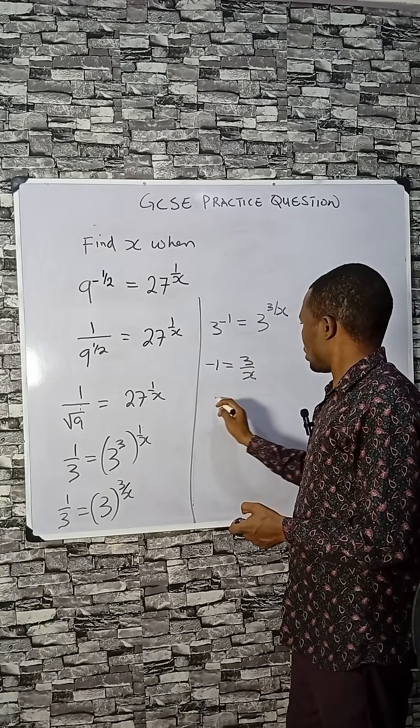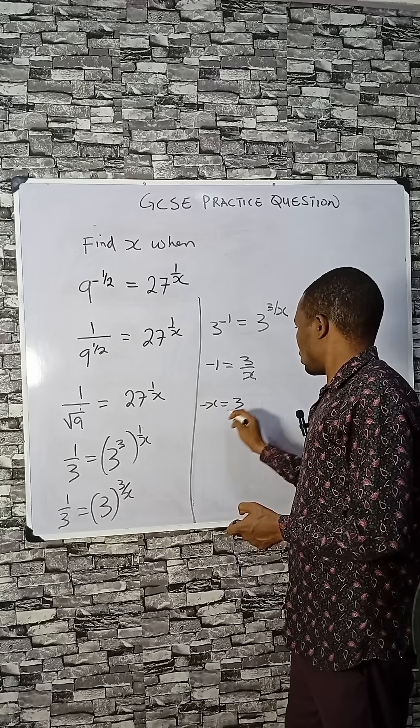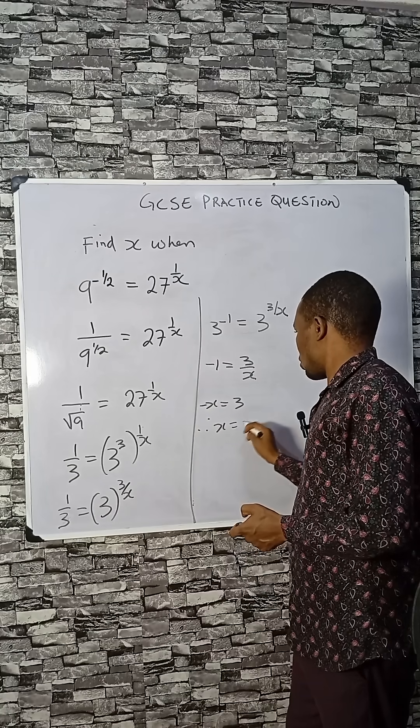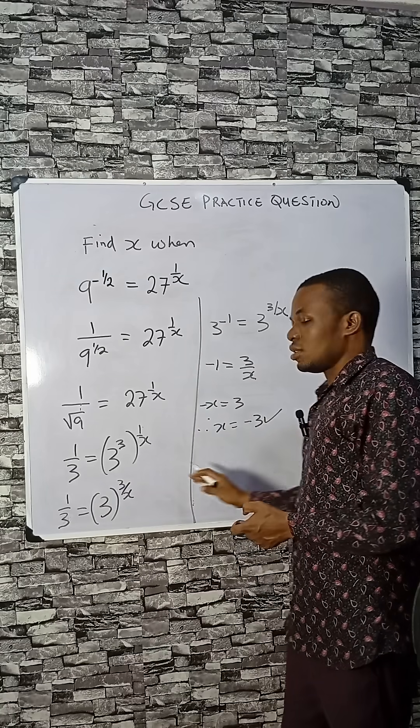You can cross multiply to have minus x equals to 3. Therefore, x equals to minus 3. This is simple.